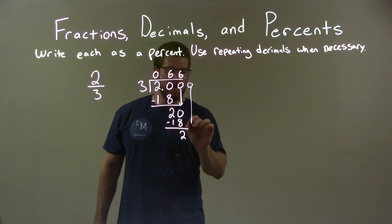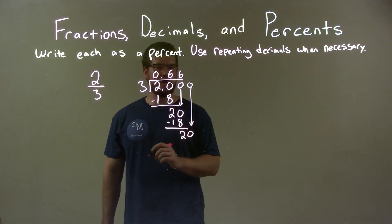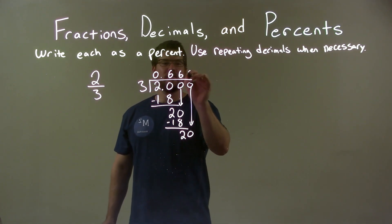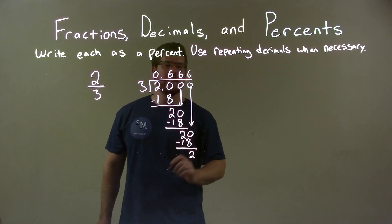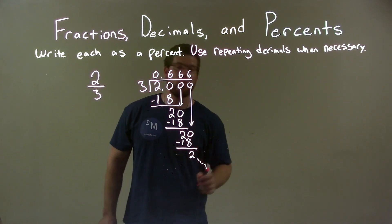We add another zero, bring that down, one more for good measure. Six times three is eighteen. We subtract it again and we get a two. This is going to repeat forever.